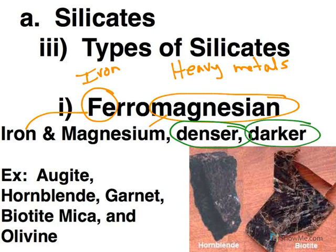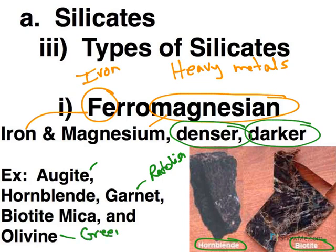Here we see two examples: Hornblende and Biotite Mica. Other examples of ferromagnesian minerals include Augite, Hornblende, Garnet — which actually has a reddish color — Biotite Mica, and Olivine, which is actually green in color. And here's something bizarre: according to how geologists think of color, green is considered the darkest color. So green is actually considered darker than black when we talk in terms of darkness of a silicate or of any mineral.